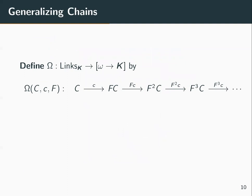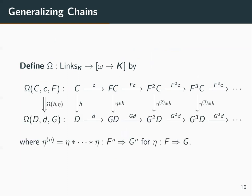Next, we can define a functor Ω out of the category of links into the category of omega-chains. Its action on a link is given by iteratively applying the functor to the initial link. The action on morphisms — given some morphism (H, η) between initial links — produces a family of morphisms, where the component from F^n(C) to G^n(D) is the nth iterate of η taking us from F^n to G^n, then using H to take us from C to D.